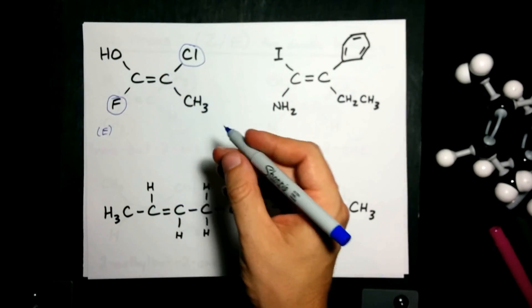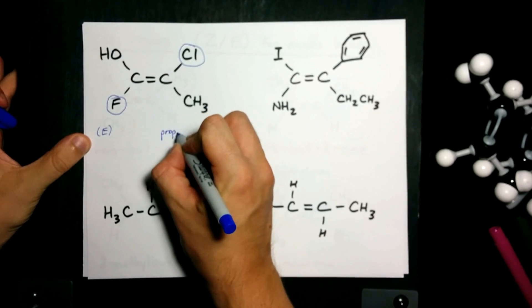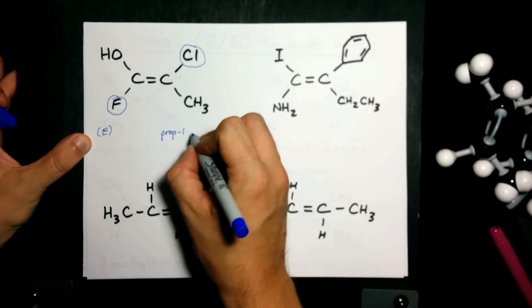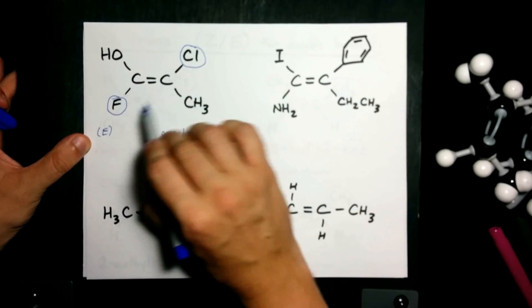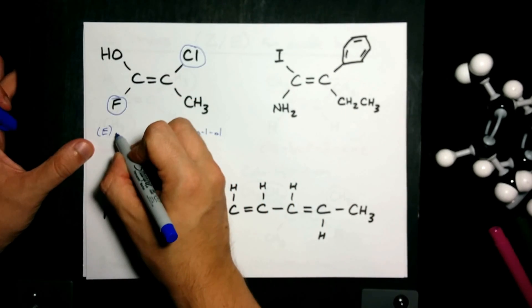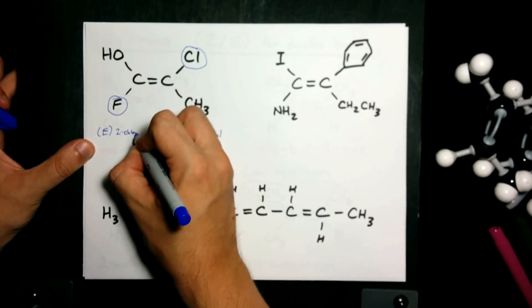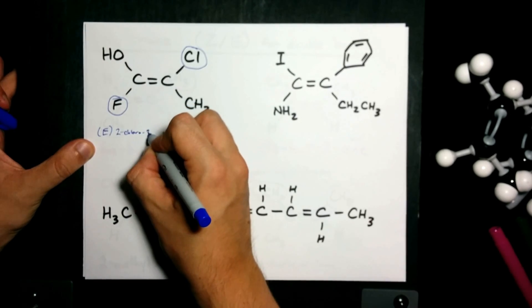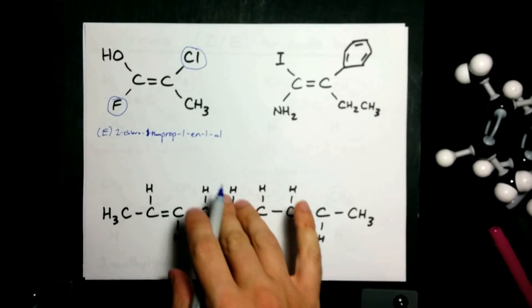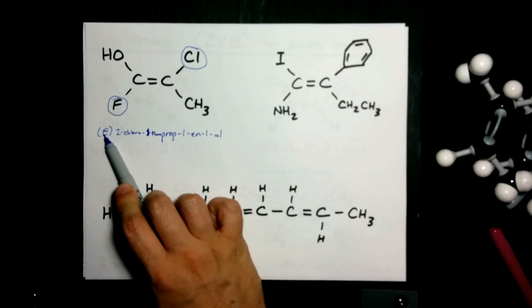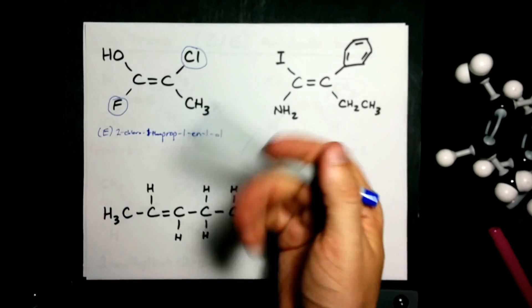Now, I don't particularly want to name this. It's a, I'll name it anyways. It's a prop-1-ene-1-ol because it's an alcohol but we have 2-chloro and 1-fluoro. I'm not doing that again. The point is it's E because they were on opposite sides like trans.